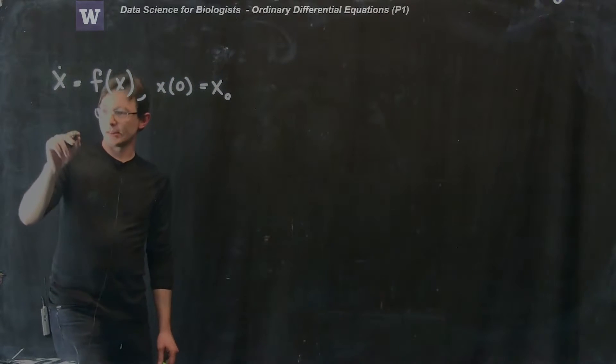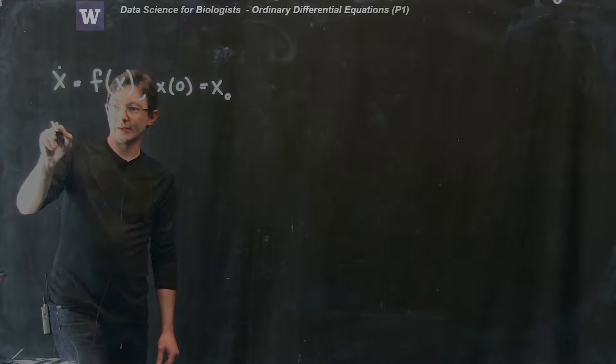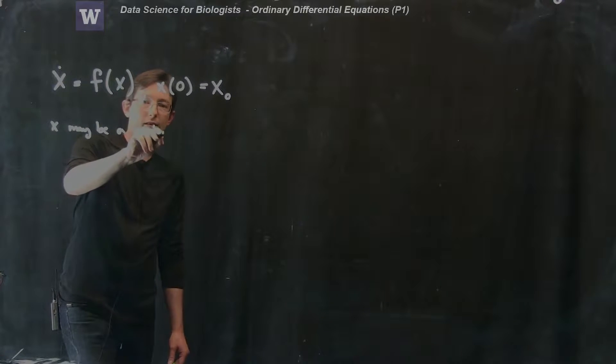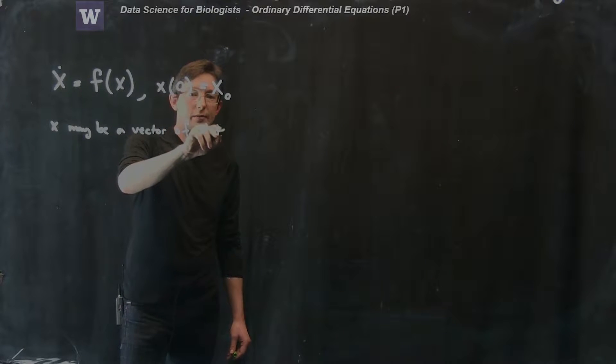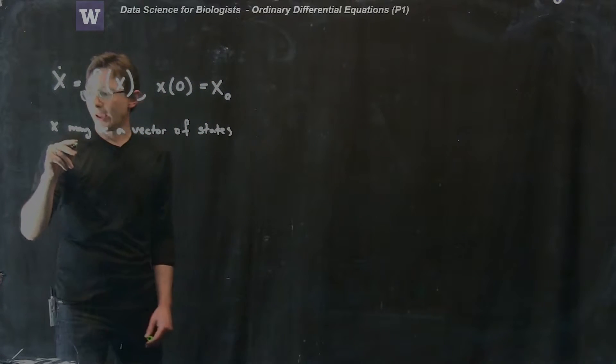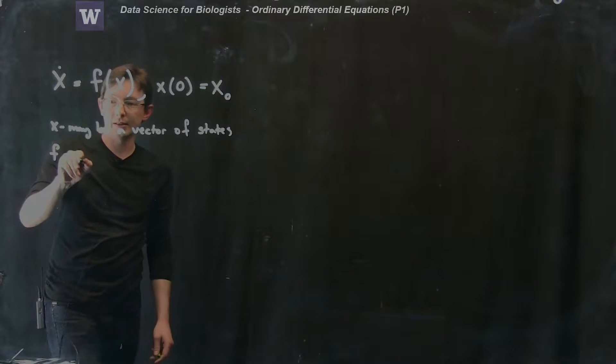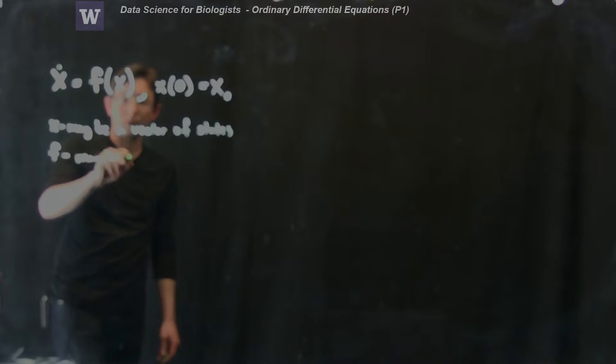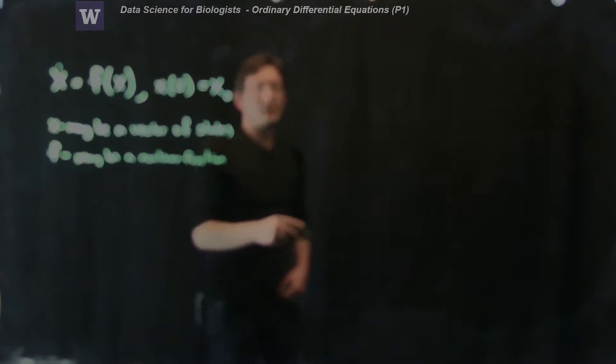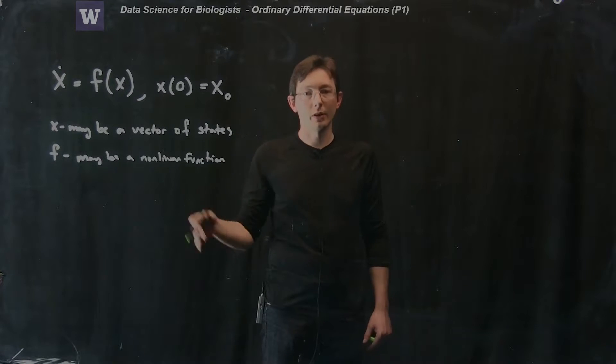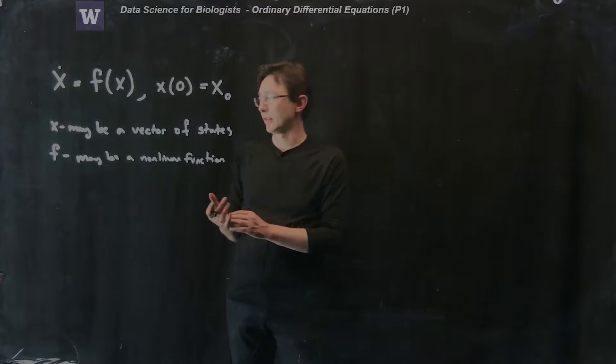So the way we usually start this, we say x may be a vector of states like in the example I just talked about, and f might be a nonlinear function. This f might be particularly nasty, a nonlinear function. It might be something like a sine or cosine or something even more complicated than that.